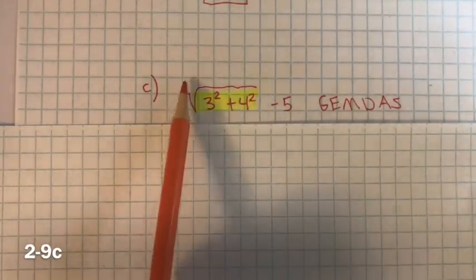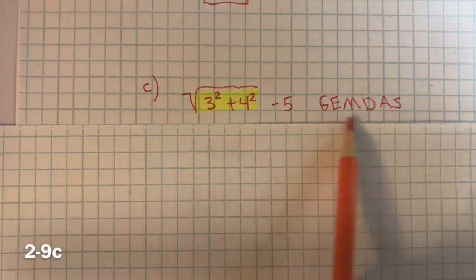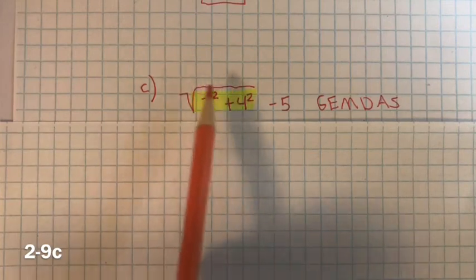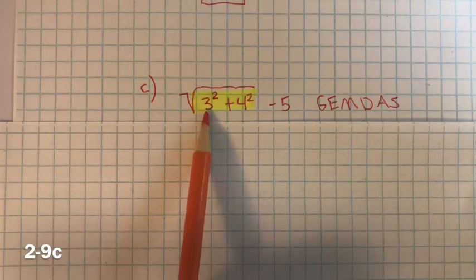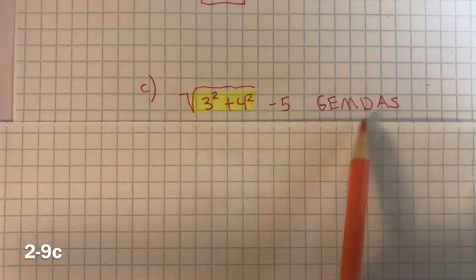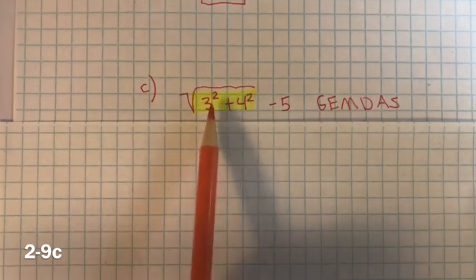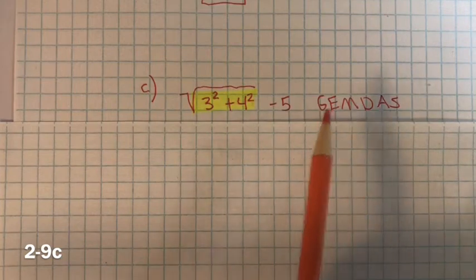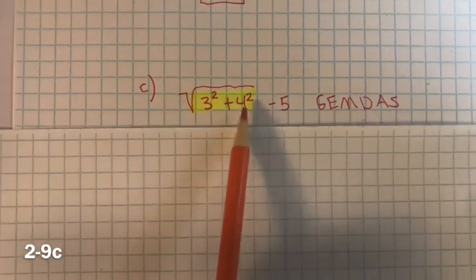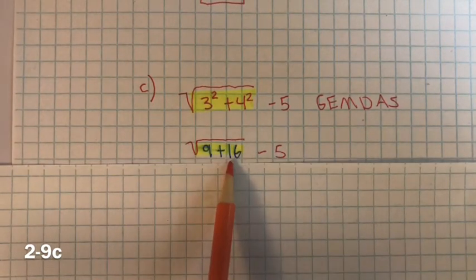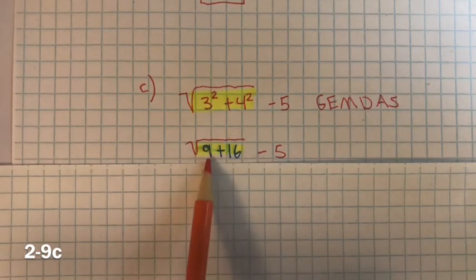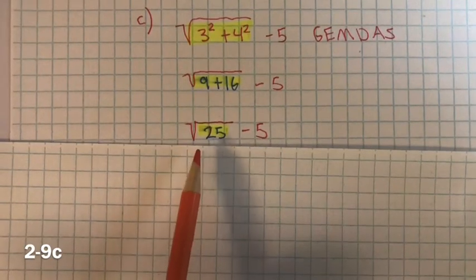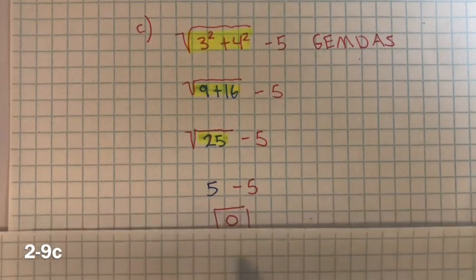Problem 2-9C. We're following order of operations GEMDAS, and we treat the radical sign as a grouping symbol, so we simplify what's under the radical first. Anytime you have grouping symbols, start the order of operations over. We have exponents inside: 3 squared is 9 and 4 squared is 16. Then 9 plus 16 is 25. The square root of 25 equals 5, and 5 minus 5 equals 0.